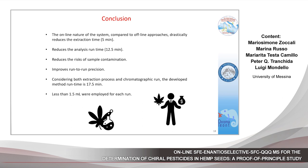In conclusion, the online nature of the system, compared to an offline approach, drastically reduced the extraction time — the total extraction time was only 5 minutes. Considering the SFC run time of 12.5 minutes, the method is quite fast. The online nature also reduced the risk of sample contamination and sample loss, and improved run-to-run precision. Considering both extraction and chromatographic run, the total method run time is 17.5 minutes, and less than 1.5 mL of methanol were employed for each run.